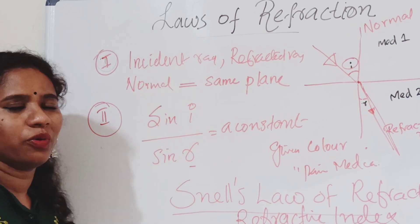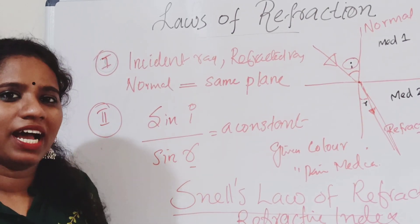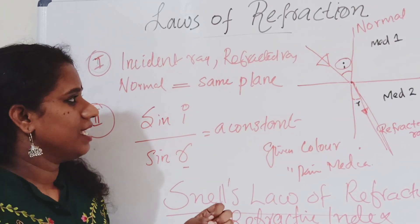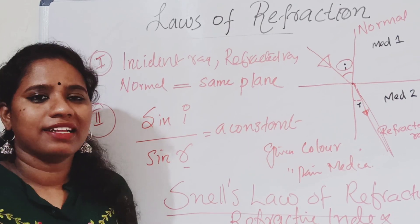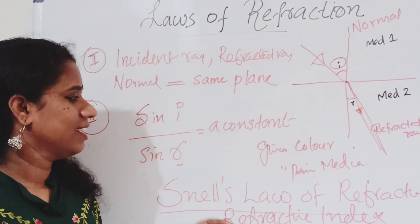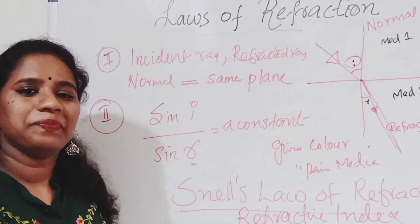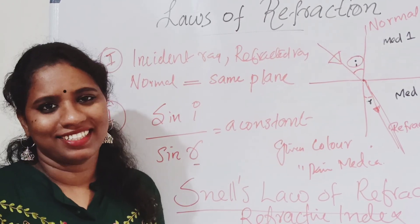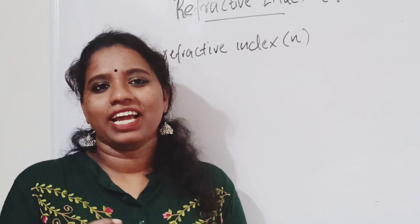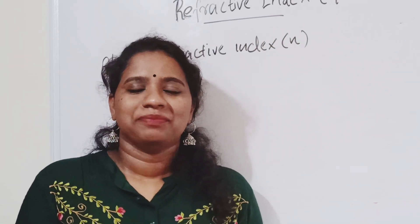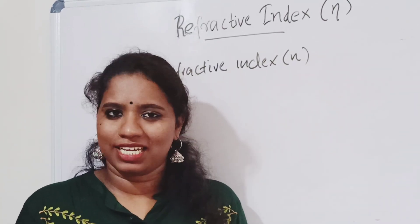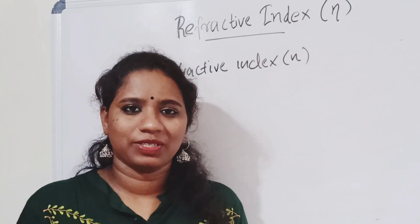So that is our second law of refraction. We have now clearly explained the first and second laws of refraction. Both are now easy for you. Now we are going to study the refractive index — the sine of angle of incidence to the sine of angle of refraction is a constant, and that constant is known as the refractive index.